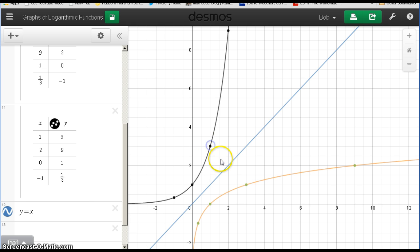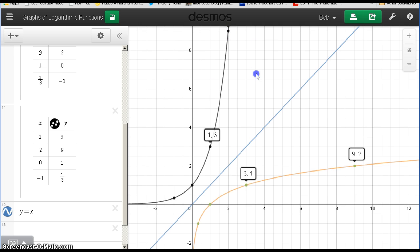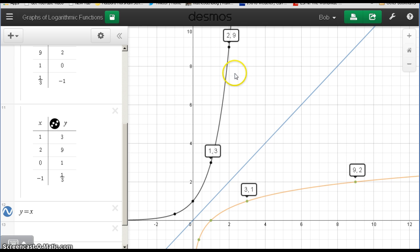You can see that this point here and its mirror: 1, 3 and 3, 1. I can also see it here with 9, 2 and 2, 9, and it is. Sure enough. So that's about it.